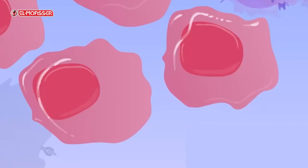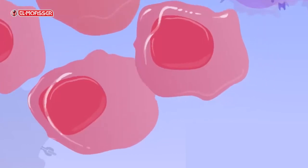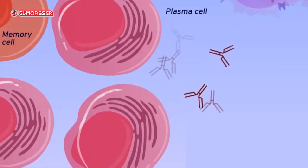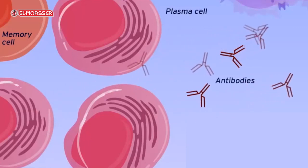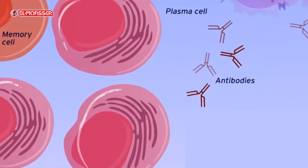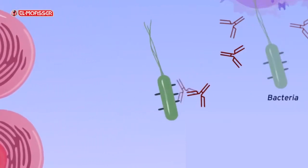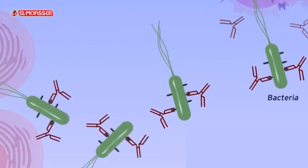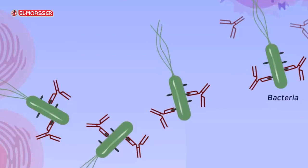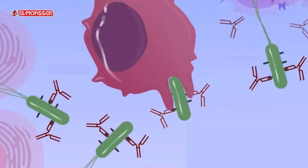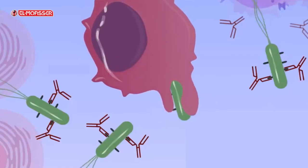Memory B cells remain in the blood to recognize the same microbe if it enters the body again. Plasma B cells produce many antibodies that circulate through the lymphatic vessels and blood circulation to combat the infection. The antibodies recognize and bind to the antigens of the microbe, making them easy to engulf and destroy by macrophages, and also by the complement system. This is how the body gets rid of microbes through humoral immunity.